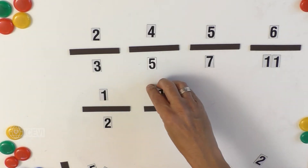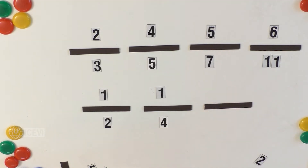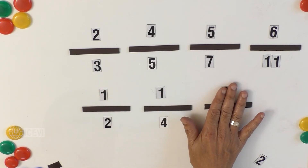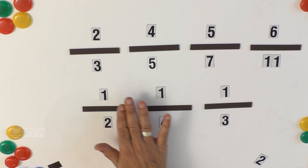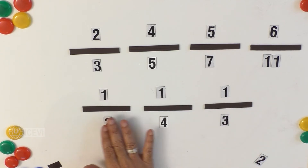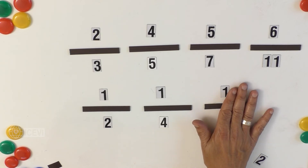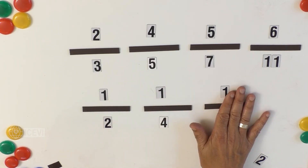Now let us consider: one by two, one by four, and one by three. Are they like fractions? A child should not be tempted to call them like fractions just because the numerators are the same. Whether a fraction is like or unlike is decided only by the denominator, not by the numerator. Though the numerator values are the same here, the denominator values are different, so these are unlike fractions.